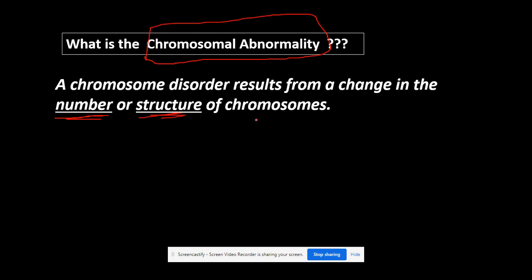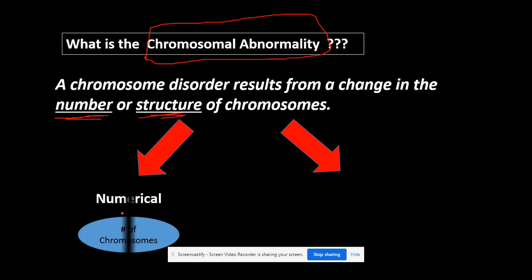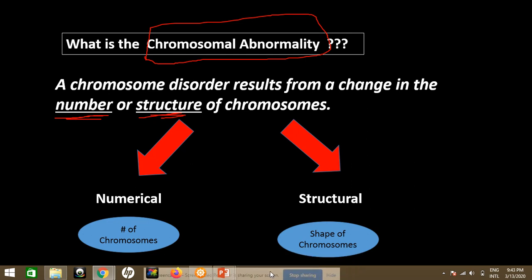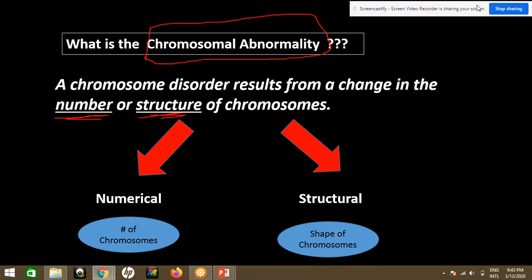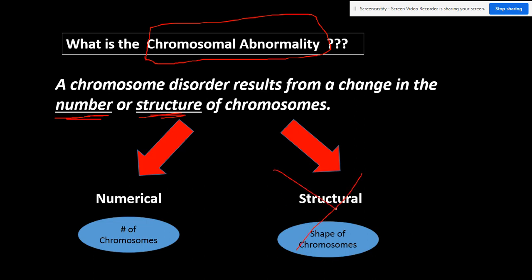The two types of chromosomal abnormality are either numerical, which is in the number of chromosomes, or structural, which is in the shape of chromosomes. Structural chromosomal abnormality is not my concern here. My concern is numerical chromosomal abnormality — when I have an abnormality in the number of chromosomes, either missing a chromosome or having an extra chromosome.